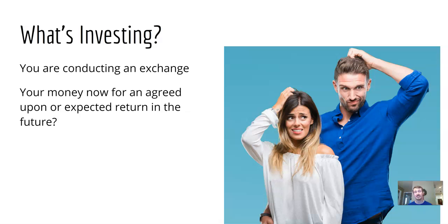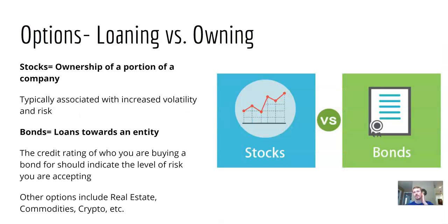Some of them will be fixed rates, and some of them will be increased risk and increased return. That's one thing you'll learn about investing — usually there's a correlation between the risk and the return of an investment. Meaning, if there's a higher risk that you will lose your money, then there's typically a higher return that should come with that risk. So, something to take into account as you're making your choices. Let's just cover the very simple basics in this episode: stocks and bonds.